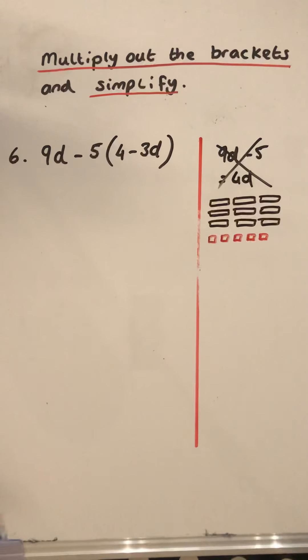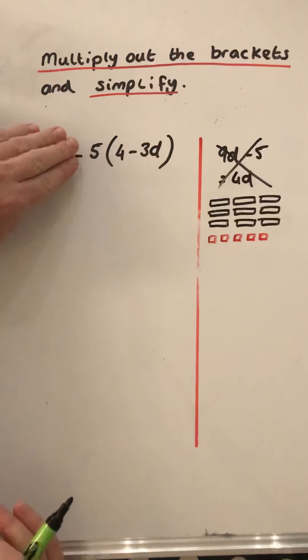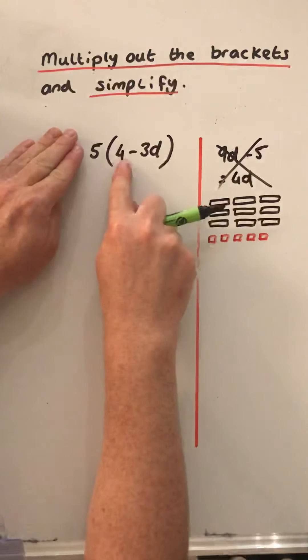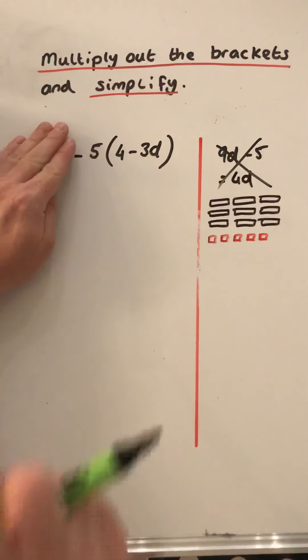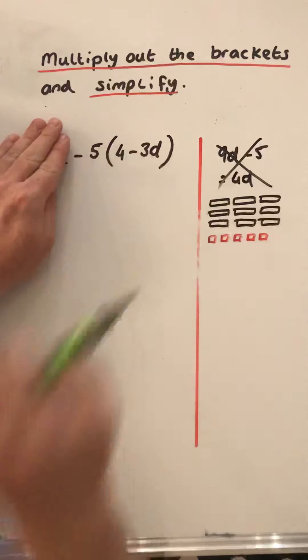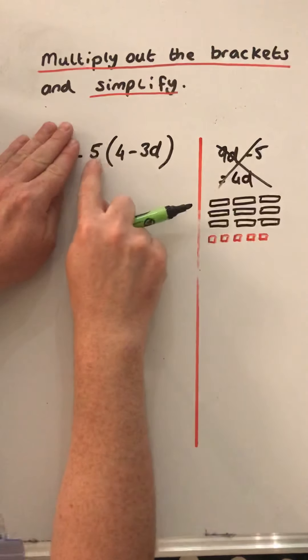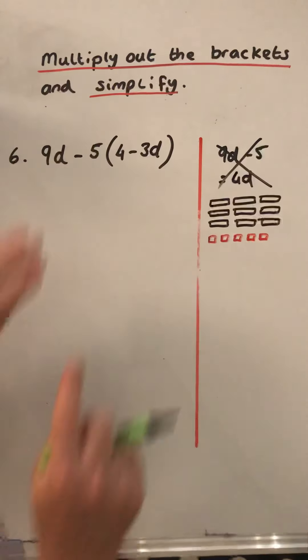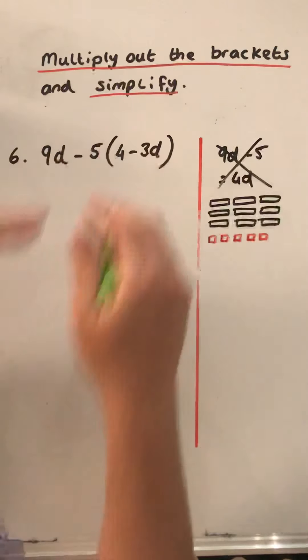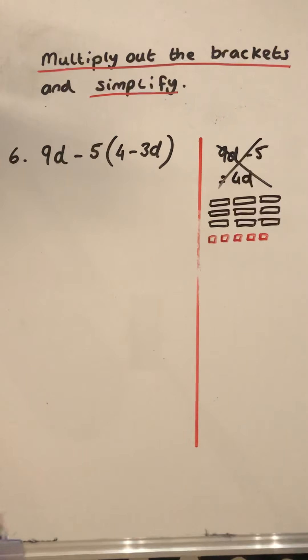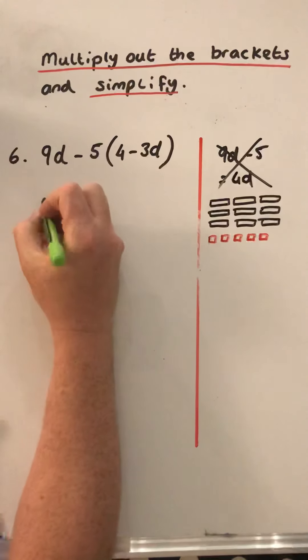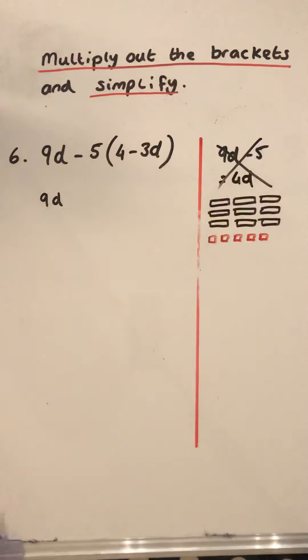So we can't do anything with them anyway. What we do have is we've got 5 groups of 4 minus 3d, but in fact we've got negative 5 groups of 4 minus 3d. So if we had 5 groups of 4 and 5 groups of negative 3d, what would we eventually get to? We know we're not doing anything with this 9d.